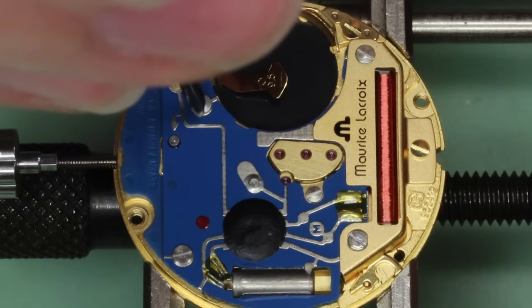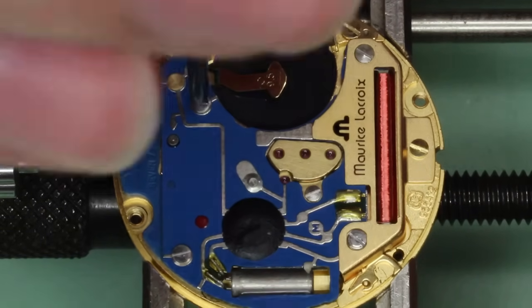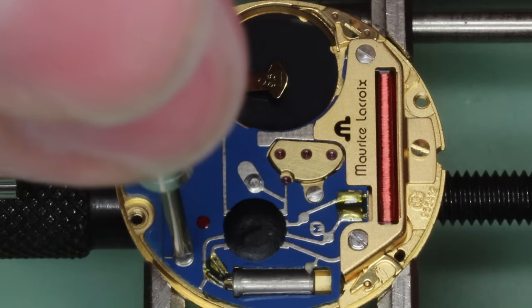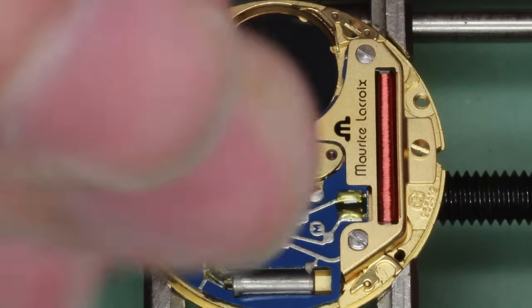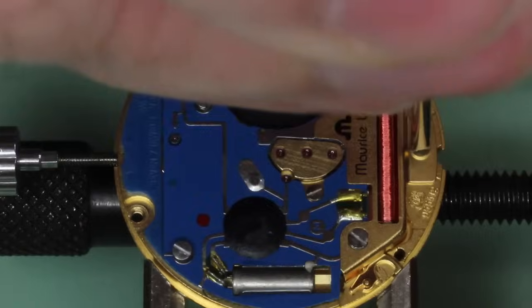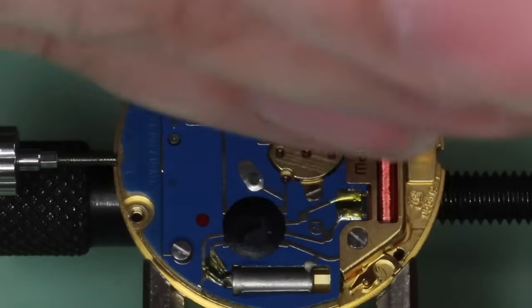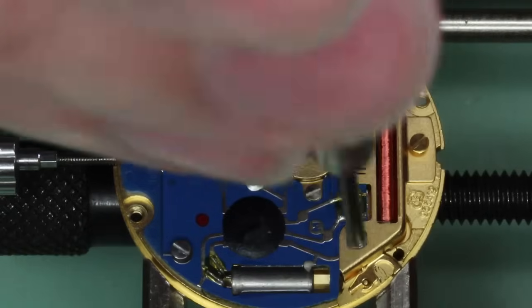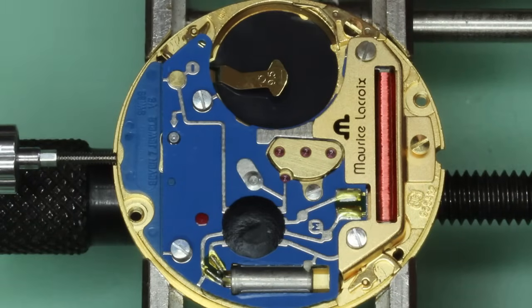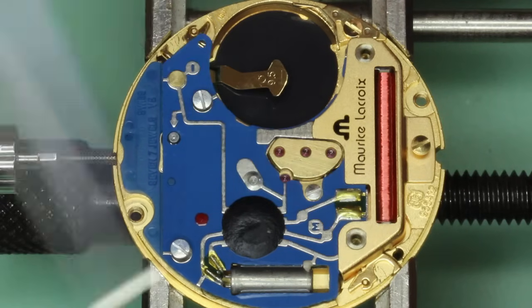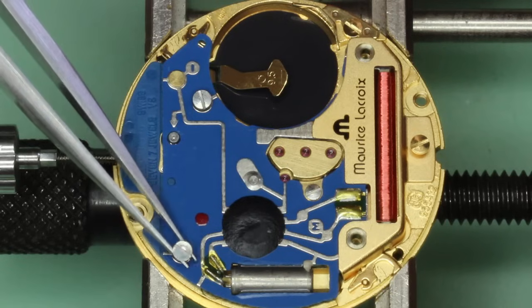Okay, now we'll remove the circuit board. This one is a short screw. Obviously being careful not to slip and scratch the coil. On this movement the coil is not separate from the circuit, it's one piece. So damaging the coil means replacing the whole circuit board.